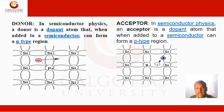In semiconductor physics, an acceptor is a dopant atom that, when added to a semiconductor, can form a P-type region. In pure silicon, when a third-group element such as boron is added, this boron atom replaces a silicon atom and bonds with the neighboring silicon atoms. Because boron is a third-group element, four electrons of the neighboring silicon bond with boron, but there is a deficiency of one electron in the boron atom that acts as a hole. So it accepts an electron from the neighboring silicon atom — hence it is named an acceptor.